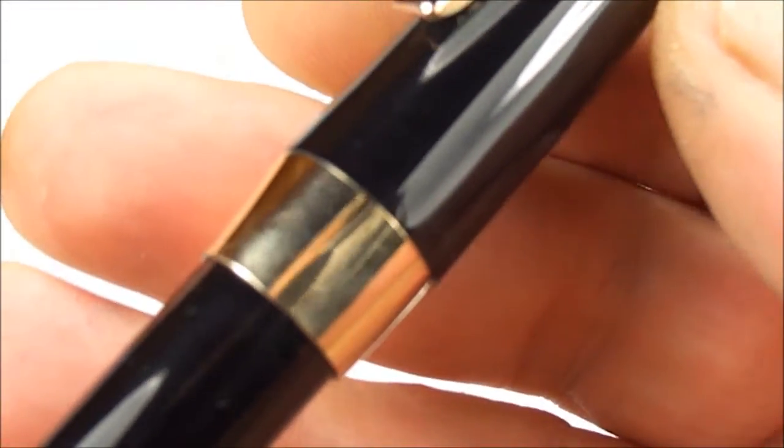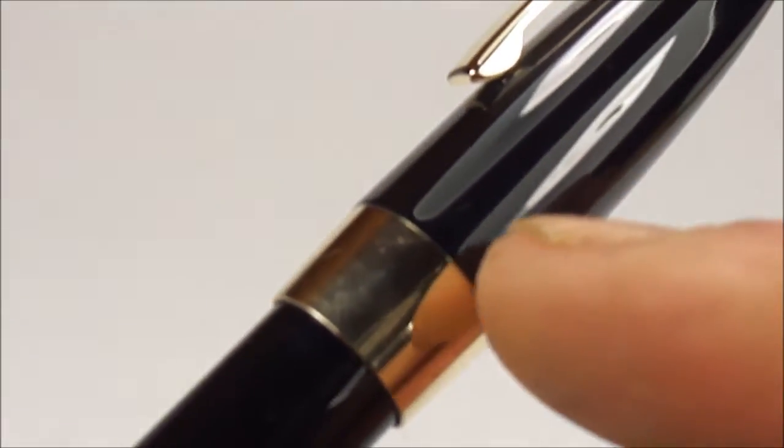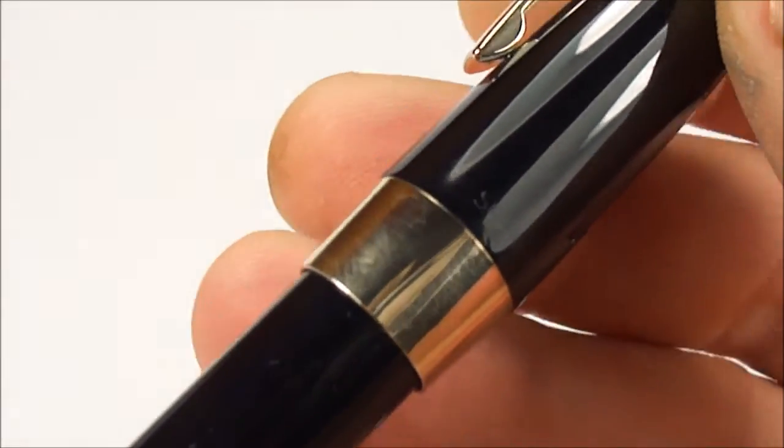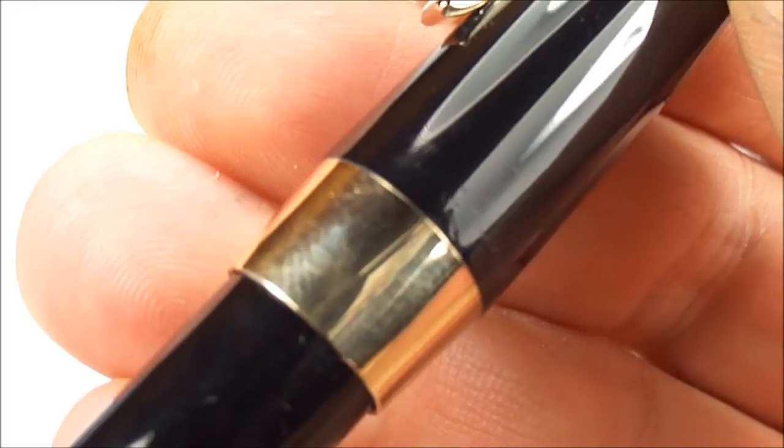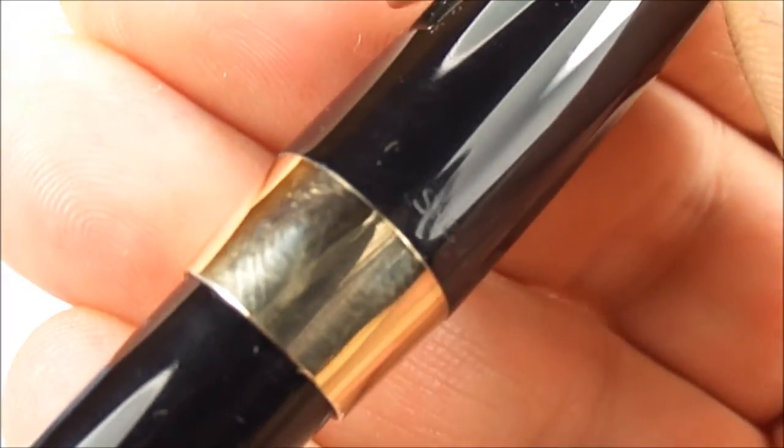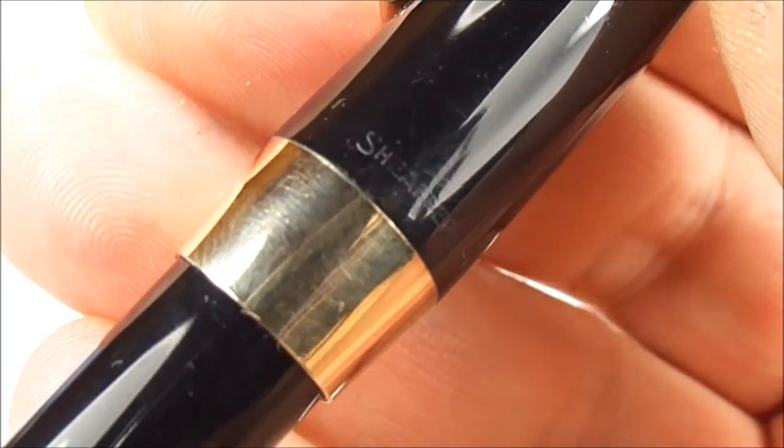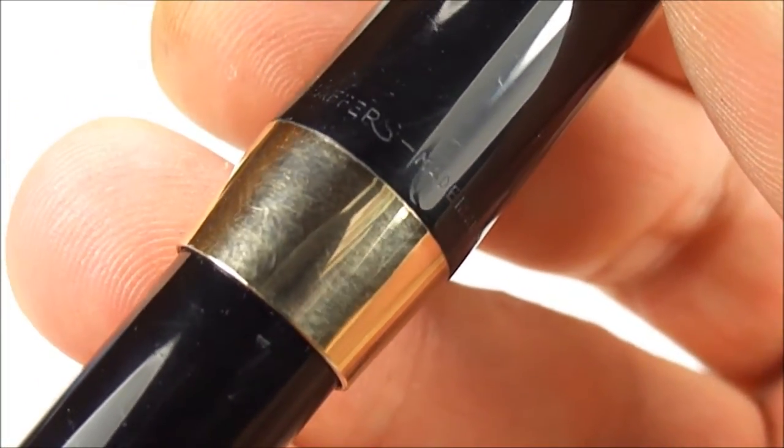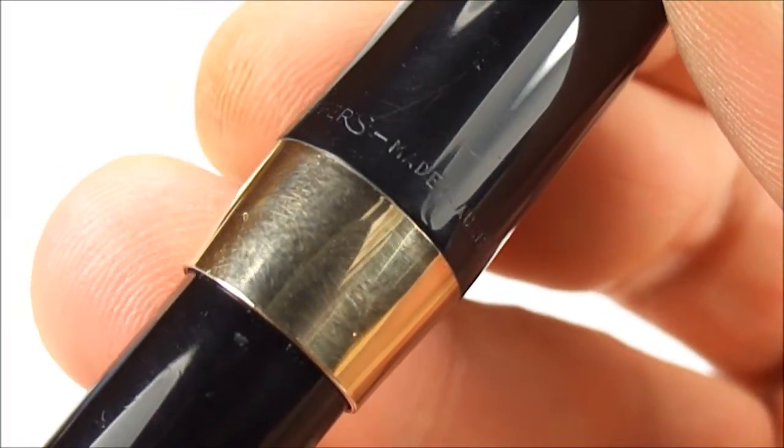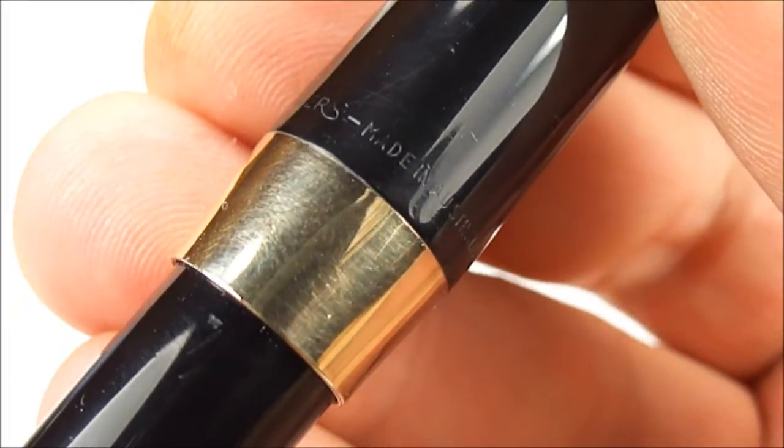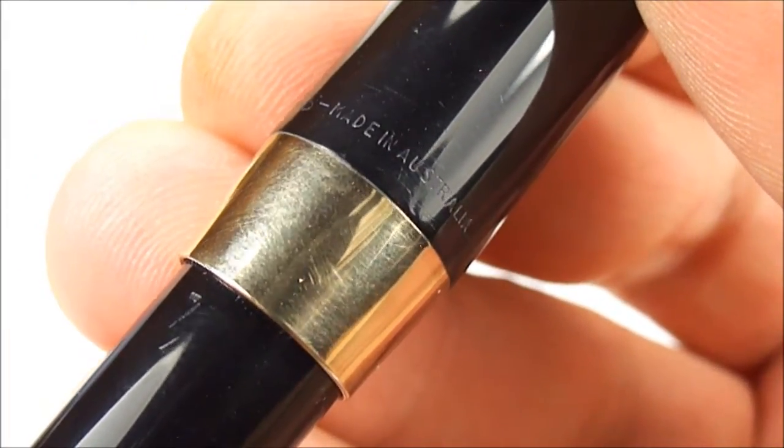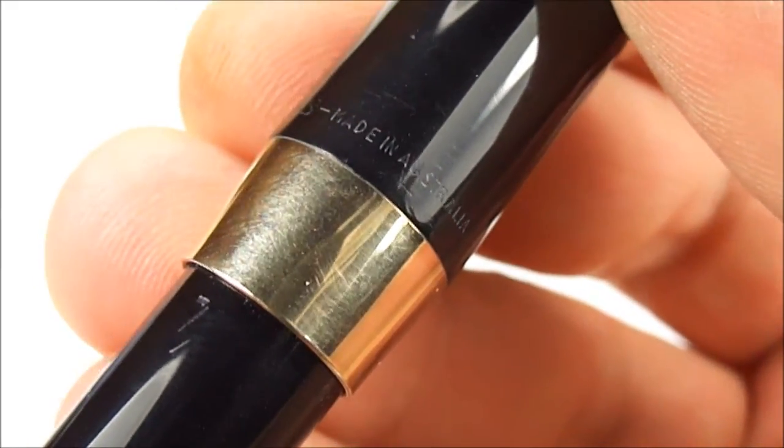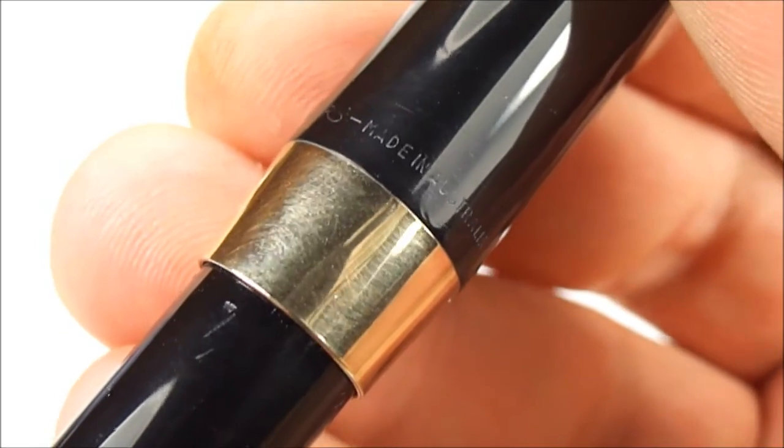If we show you the imprint on the bottom of the cap, just above the cap band there. Let's try and keep it nice and still for you. What you'll see, it says Schaefer's, and then if we turn it round slowly, what you should be able to see there is made in Australia. So as it states there, this particular model was made in Australia.